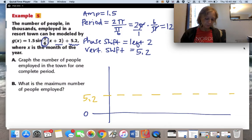I'm also going to label on my y-axis, 5.2 plus 1.5, and then 5.2 minus 1.5 to know where to go up to and down to. So, looks like I'm going to have a 6.7 here, and then I'll have a 3.7 there.